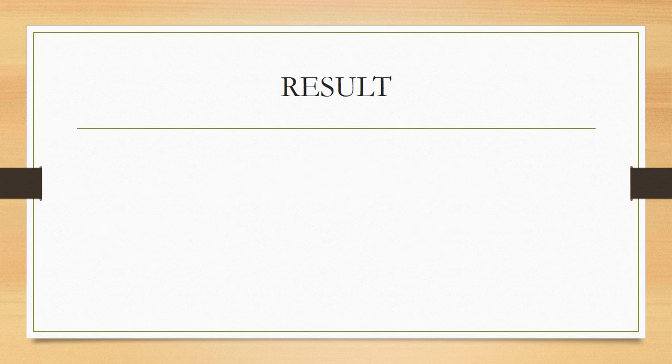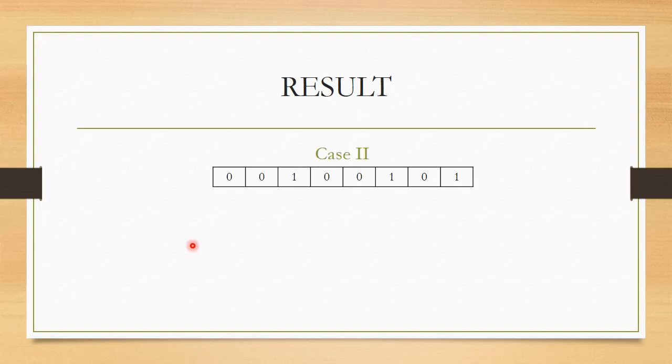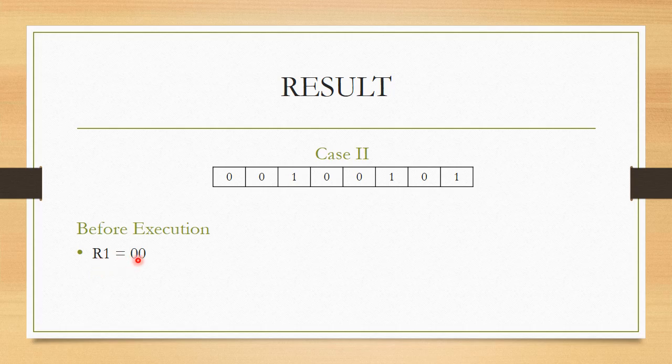Now, let us consider another case when the given number is 0010 0101, which indicates accumulator contains a number 25 hexadecimal. As you are aware, before execution I had reset the value of R1 to 0.